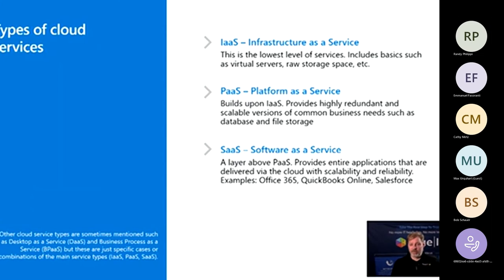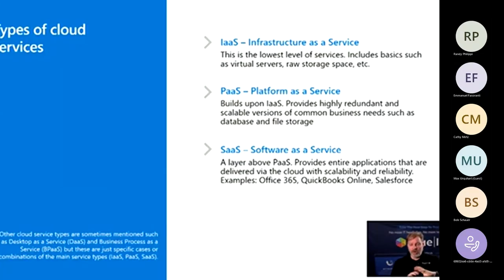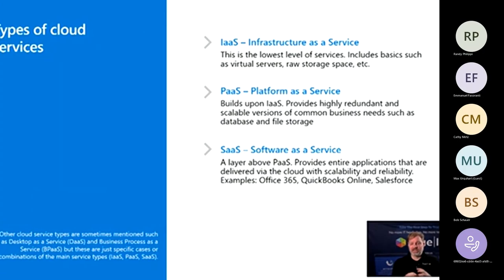The next layer up is called Platform as a Service. This takes advantage of the infrastructure that's already there — servers, storage — but layers on a specific definition of what it's going to deliver. Two examples are databases and file storage. For example, we can take a server, put it in the cloud, make it a database server, and install SQL Server on it — or we can just purchase Azure SQL from Microsoft, which already runs SQL and is highly scalable and clustered in the backend, so we don't have to worry about scalability, monitoring storage, or sizing it correctly.